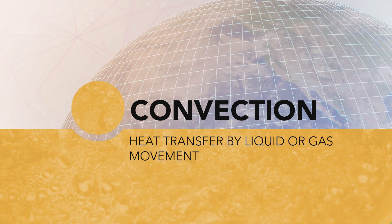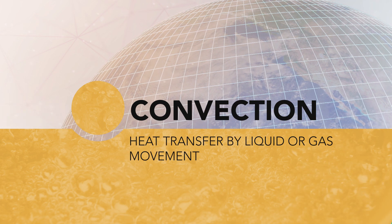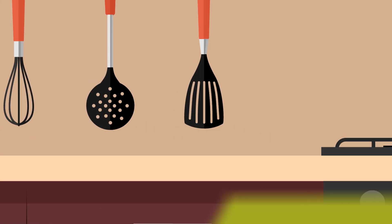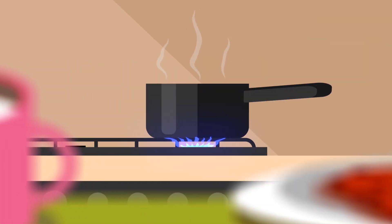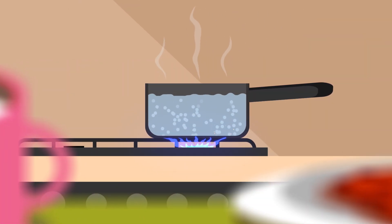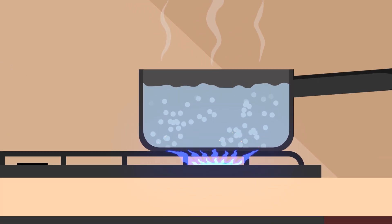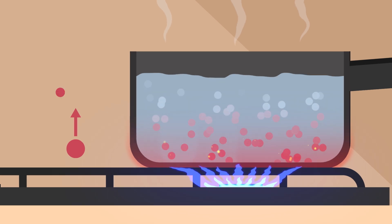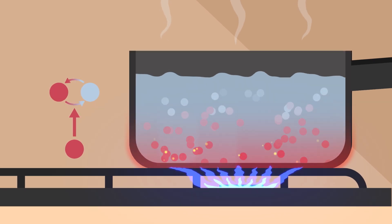The second pathway is convection, a transfer of heat by the movement of liquids or gases. An example of this is the transfer of heat through boiling water in a pot on the stove. As the water near the heat source increases in temperature, it moves into cooler areas and exchanges heat with the cooler water.